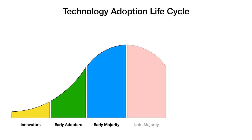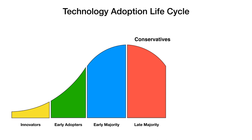We then have the late majority. These are the more conservative types. They're going to wait and make sure that it really works out for the early majority. They are not going to adopt this technology until they see others who have adopted it and it's worked well for them. They are a more conservative group.